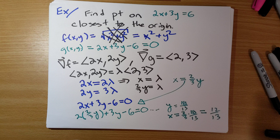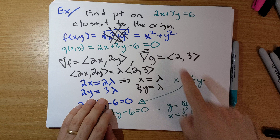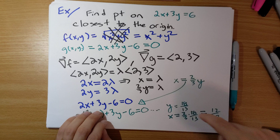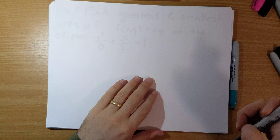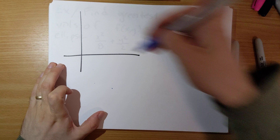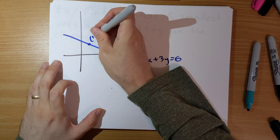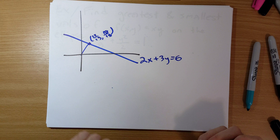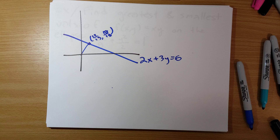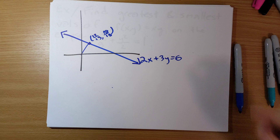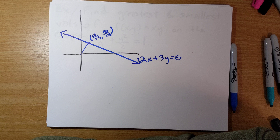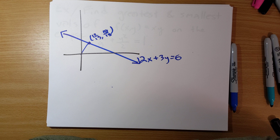So what is the point on the line 2x plus 3y equals 6 closest to the origin? x is 12/13, y is 18/13. A quick sketch shows our line, and the point (12/13, 18/13) is right there — the point that minimizes the distance. From the picture, we can see it must be a minimum, since moving off in either direction means the distance from the origin keeps getting larger and larger.